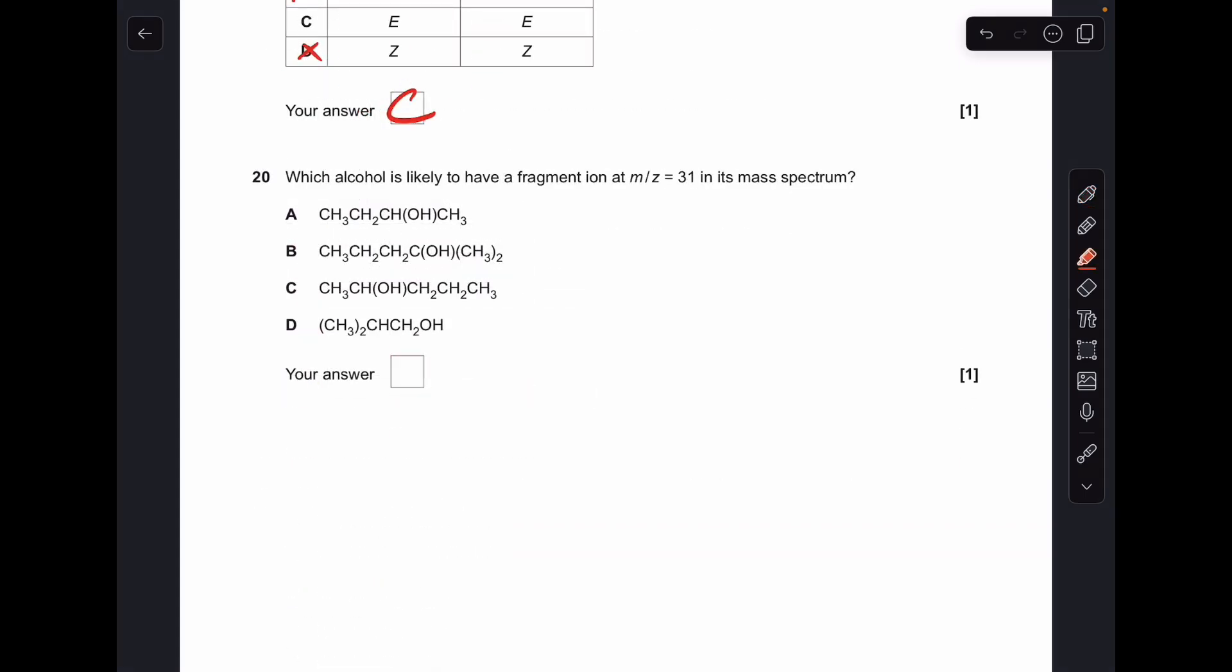And finally, number 20, which alcohol is likely to have a fragment ion of m/z 31? So which bit can you just break off, and it adds up to 31? And it's this part here. So D was the answer.